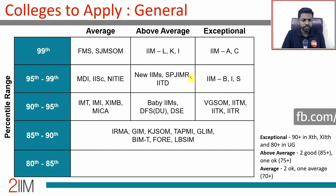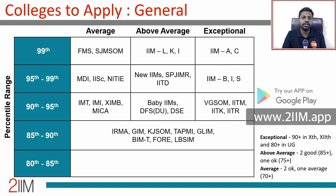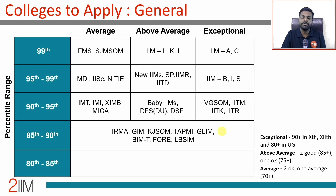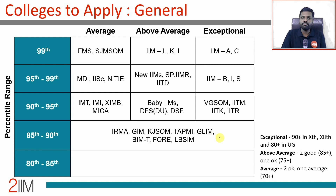If you have scored 85 to 90 and are unsure whether to apply this year or retake next year, here is a suggestion: apply for colleges this year, take one or two interviews, try to convert them. You can reach out to us in April or May — we can discuss whether you should take up a college or aim for a better one. Since you now know what this exam is about, you don't need to start CAT preparation from scratch. Get a convert first and then decide.